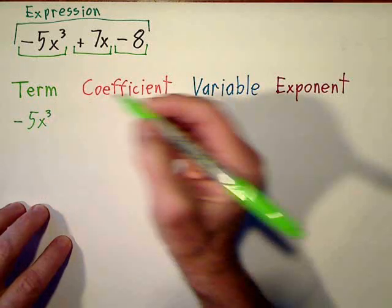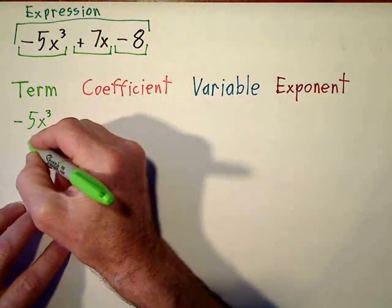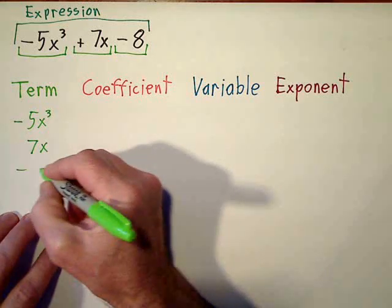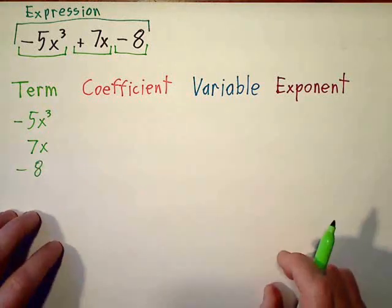Negative 5x to the third, we have a 7x, and we also have a negative 8.